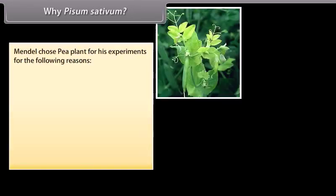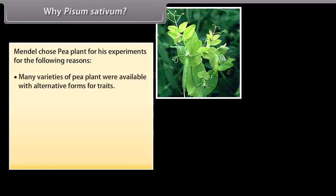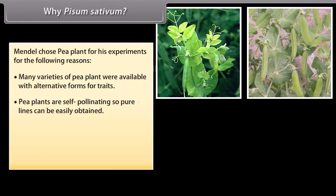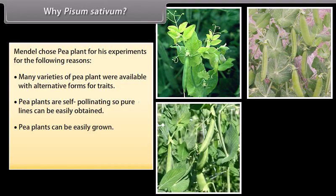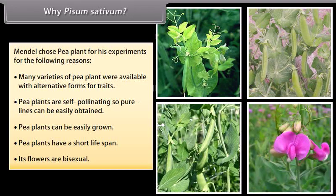Mendel chose the pea plant for his experiment for the following reasons: many varieties of pea plant were available with alternative forms for traits; pea plants are self-pollinating, so pure lines can be easily obtained; pea plants can be easily grown; pea plants have a short life span; and their flowers are bisexual.